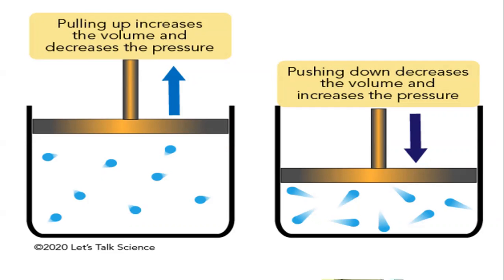Gas molecules have a lot of energy. They are always moving and bouncing off each other and anything else in their path. When gas molecules bump into things, they create pressure. Pressure is greater when gas molecules occupy a smaller space because the greater crowding results in more collisions. In other words, decreasing the volume of a gas increases its pressure.